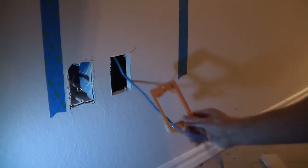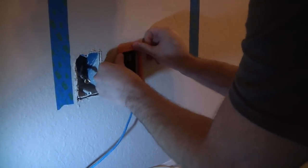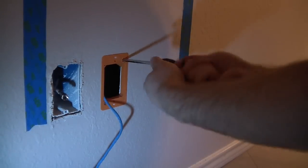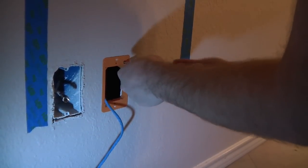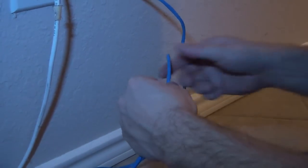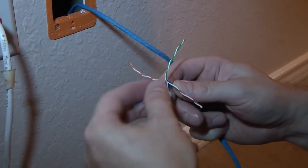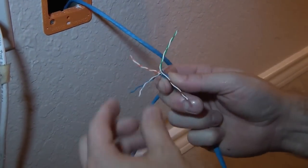Now you can install your old work wall box. The next step is to strip the insulation off of the Cat5 cable.